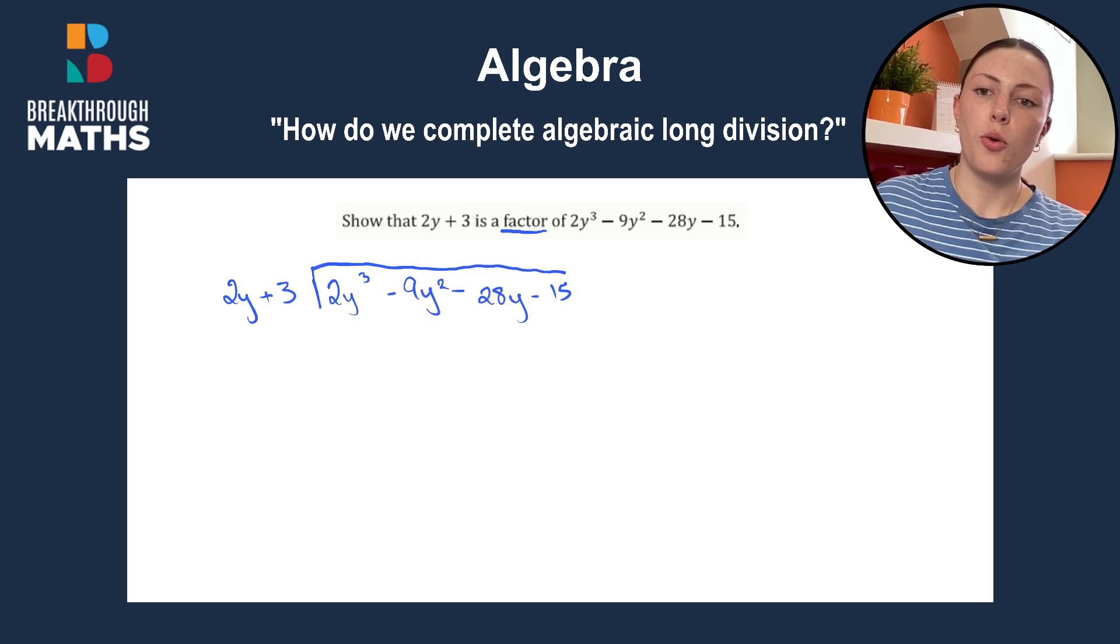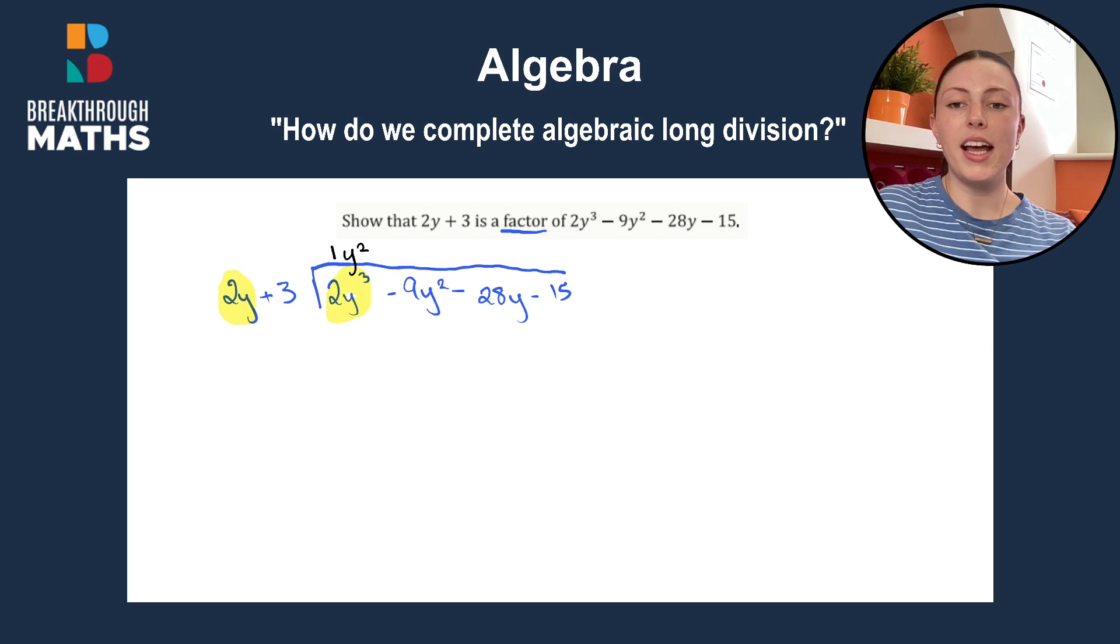Okay, so we start off with our first term on the outside and our first term on the inside and we see how many times does 2y go into 2y cubed. So 2 into 2 goes once and y into y cubed goes y squared times because y squared by y is y cubed or y by y by y, so to the power of 3.